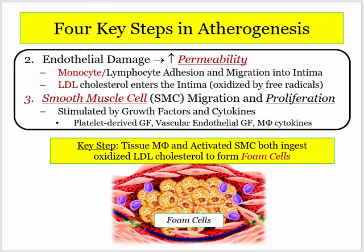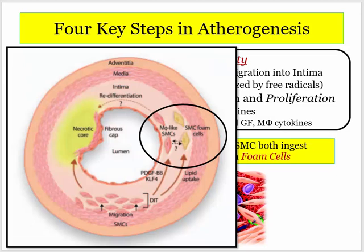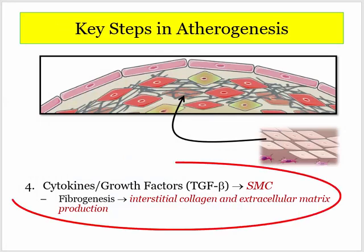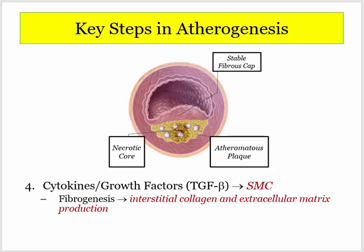Concurrently, the tissue macrophage and activated smooth muscle cell consume LDL particles, forming the characteristic foam cells. It isn't just the macrophage — smooth muscle cells participate as well. This underscores the ubiquitous role of the smooth muscle cell in atherogenesis. For the USMLE Step 1 exam, note that smooth muscle cells — not fibroblasts — elaborate interstitial collagen and extracellular matrix, resulting in an atheromatous plaque with a thick, stable fibrous cap.